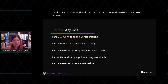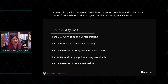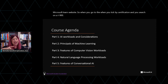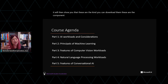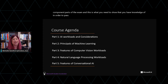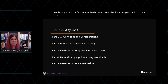That course agenda and those component parts are all visible on the Microsoft Learn website. When you tick by certification and search on AI-900, it will show you that these are the component parts of the exam and what you need to demonstrate knowledge of in order to pass it. It is a fundamentals level exam, so do not let that stress you out or think it is too complex.